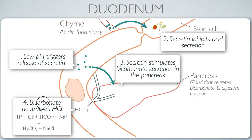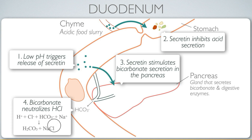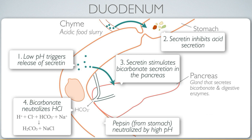The bicarbonate reacts with the hydrogen and chloride ions in the chyme. With sodium also available, the chemical reaction produces carbonic acid and sodium chloride, which raises the pH of the chyme considerably. Once the pH has risen, pepsin — which was toxic to proteins at low pH — becomes neutralized. So the release of secretin largely deals with the problem of toxic chyme emerging from the stomach.